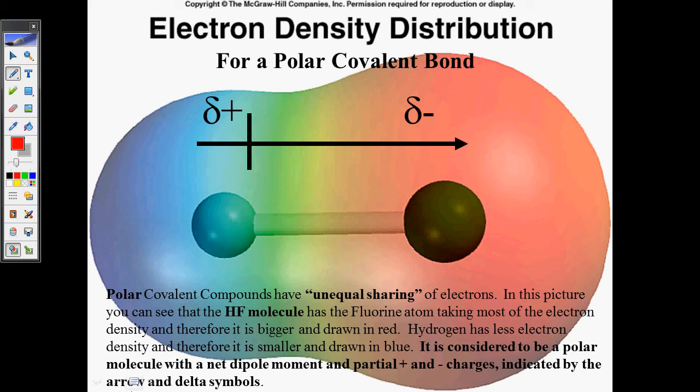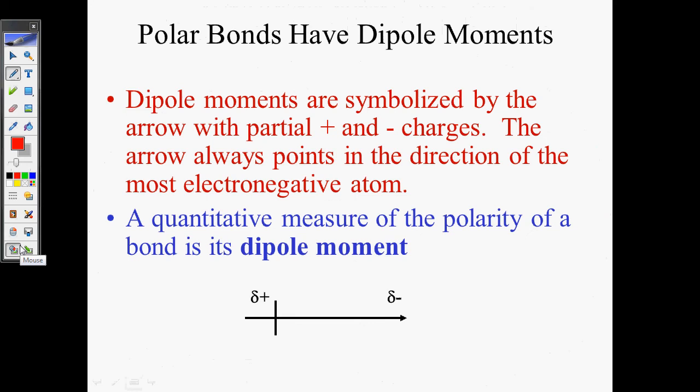All right? So this, polar covalent, unequal sharing of electrons, you can see that the HF molecule has the fluorine atom taking most of the electron density. Here it is. Electron density, red. All right? Hydrogen atoms with less electron density, has less electron density. Therefore, it's smaller and drawn in blue. It is considered to be a polar molecule with a net dipole and partial positive and negative charges indicated by the arrow. Not a problem. You can do that.